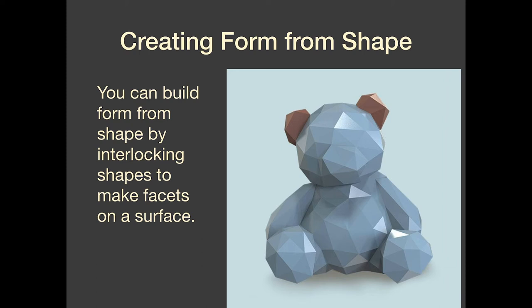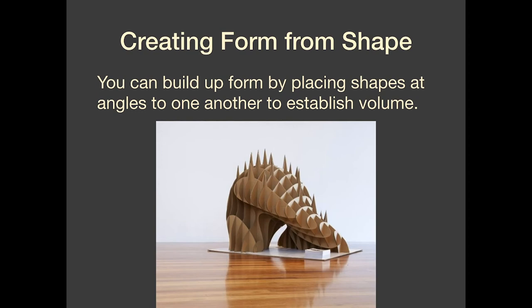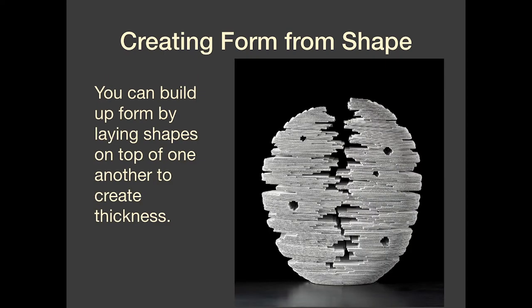We can build form from shapes in a whole number of different ways. The first way is to build the form by interlocking shapes on the surface of something — essentially creating facets on that surface, like on this digital bearer sculpture here. You're skinning the surface, but instead of skinning it with lines like we did for project one, you're creating interlocking shapes. The next way is to take shapes and place them at angles to one another to establish a volume — like this sculpture that looks like a melting waffle, where shapes at right angles come together to establish that form. The third way is by laying shapes one on top of another, like a stack of pancakes. Both of these last ways will work pretty well to transform shape into form.